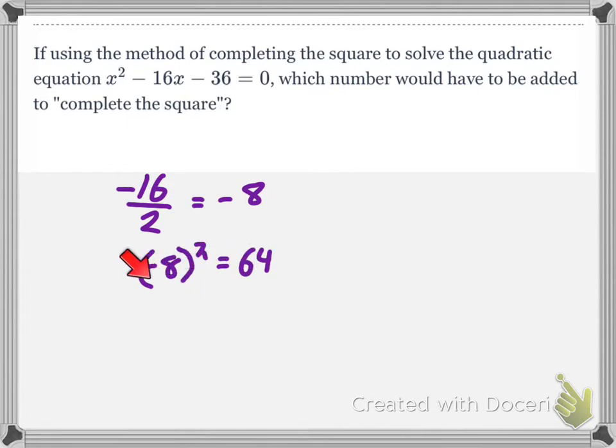And be really careful when you enter this into your calculators, especially if you're using a graphing calculator. You have to put the negative 8 in parentheses and square that. If you don't, it thinks if you just write like negative 8 squared in your calculator, it thinks, remember your order of operations, it's going to square it first and then it's going to multiply it by negative 1, and you would end up with negative 64, which is not correct.